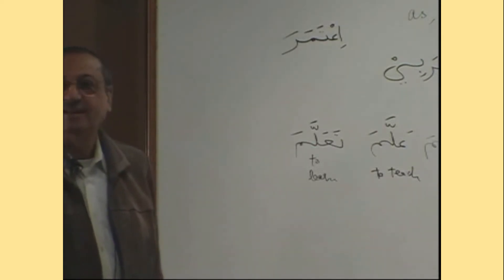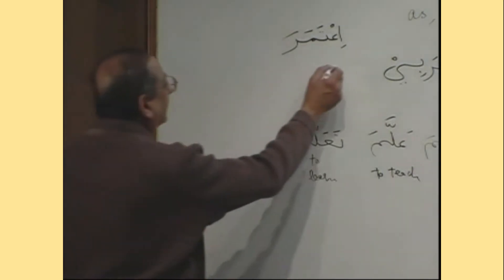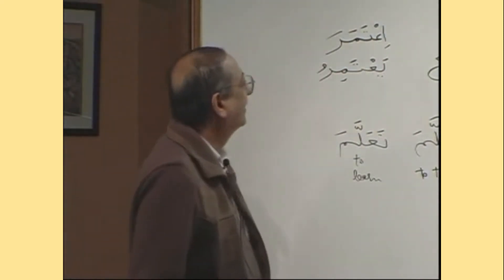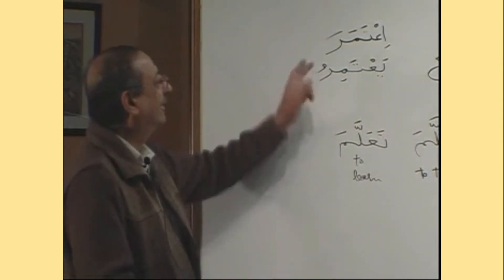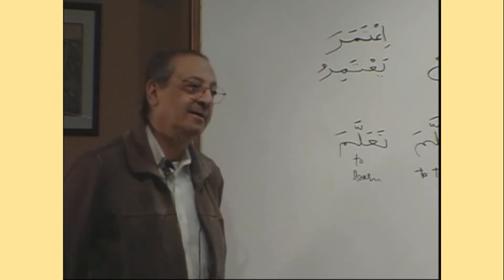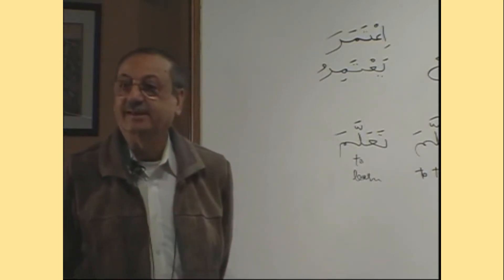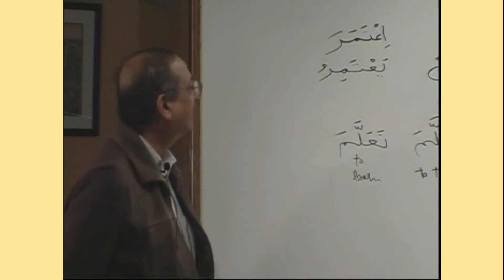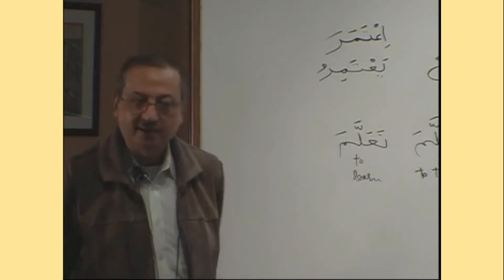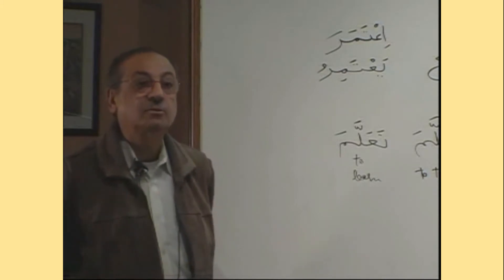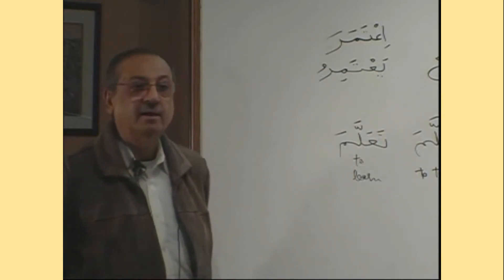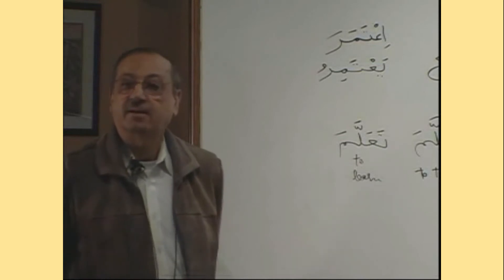Do you think we can conjugate the whole thing in Madhi? Iyatamara, yetamara, yetamaru, yetamarat, yetamarat, and then yatamarna. Yatamarna. Iyatamarta, yetamartuma, yetamartum, yetamarti, yetamartuma, yetamartunna. Yatamartu and yetamarna. Very good.